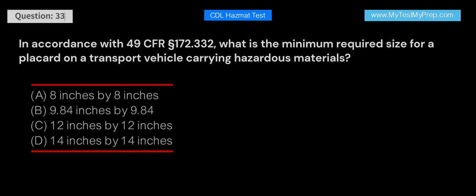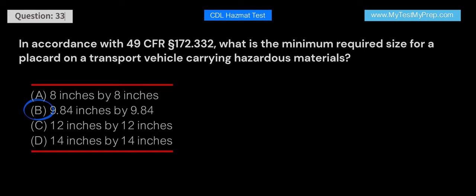In accordance with 49 CFR Section 172.332, what is the minimum required size for a placard on a transport vehicle carrying hazardous materials? A. 8 inches by 8 inches. B. 9.84 inches by 9.84 inches. C. 12 inches by 12 inches. D. 14 inches by 14 inches. Answer: B. The minimum required size for a placard is 9.84 inches by 9.84 inches (250 mm by 250 mm). This size ensures that the placard is easily visible and communicates the hazards of the materials being transported.